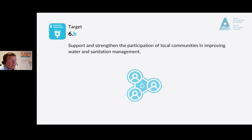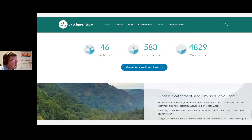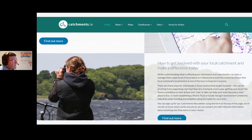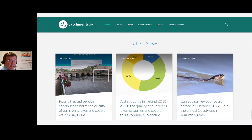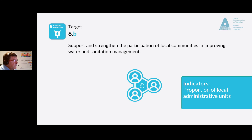Target 6b: support and strengthen the participation of local communities in improving water and sanitation management. In Ireland, the website catchments.ie helps people understand their connection to water and encourages individuals and local communities to get involved with this target. We will look at it in more detail in the module dealing with SDG 6. The indicator, 6b.1, is the proportion of local administrative units with established and operational policies and procedures for participation of local communities in water and sanitation management.